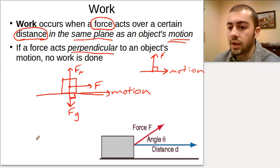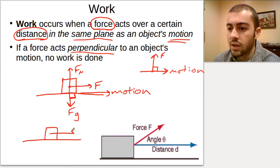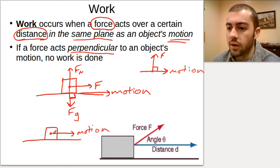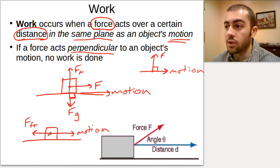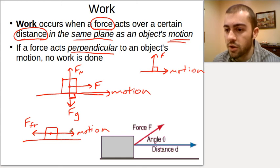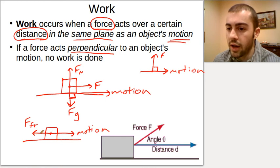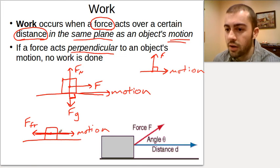Now consider a box sliding across the floor with a frictional surface. The force of friction is acting on this box as it slides. Would work be done by friction? Yes, because the frictional force and the motion are in the same plane — not the same direction, but the same plane. So if the force and the motion are in the same plane, work is going to be done.